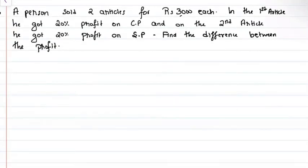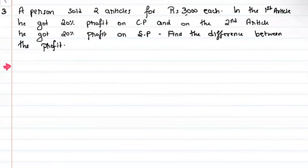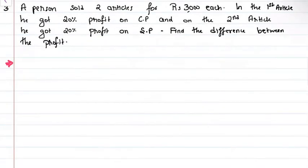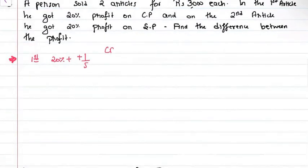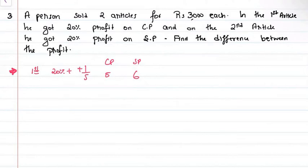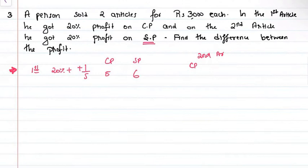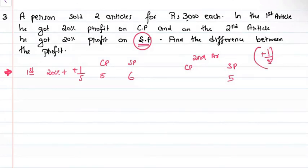Next question: A person sold two articles for Rs.2000 each. In the first article he got 20% profit on cost price, and on the second article he got 20% profit on selling price. Find the difference between the profit. For the first article, 20% profit on cost price means cost price 5, selling price 6. Selling price is Rs.2000, so cost price is Rs.1666.67 and profit is Rs.333.